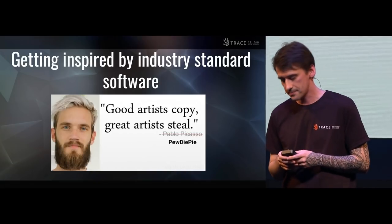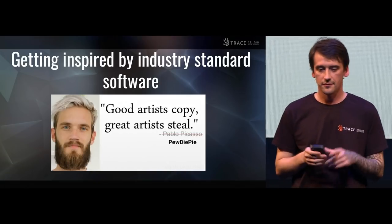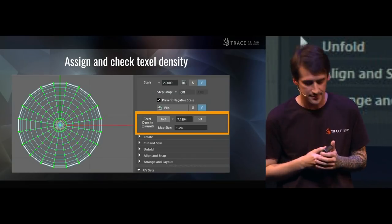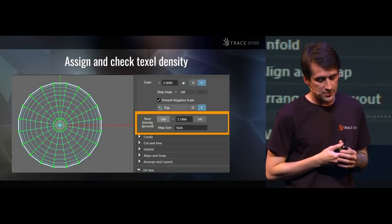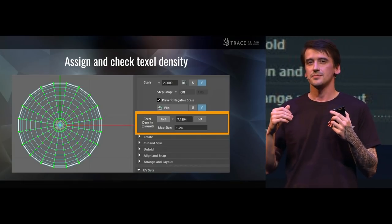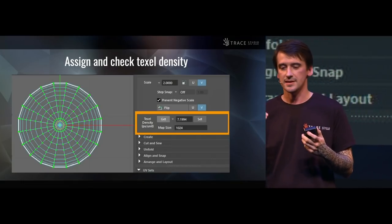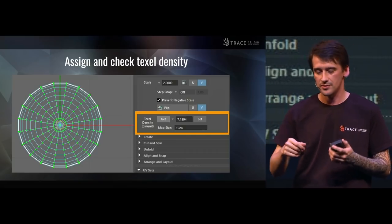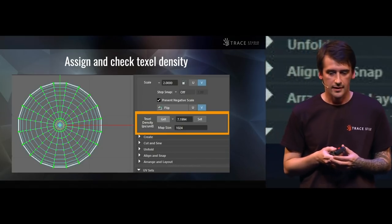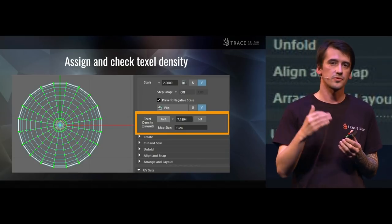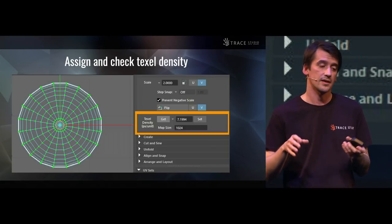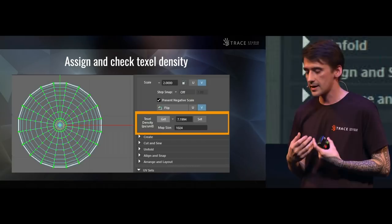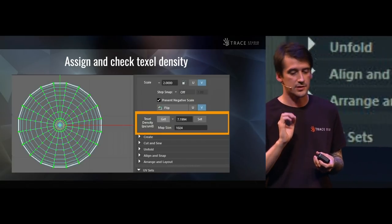I think the best way would be to get inspired by the example of other industry standard software, which has a lot of neat features. First of all, assigning and checking texel density by clicking a button. This one is really important because you do not want your texel density values across all of your assets to be random — you need to get them more or less uniform. This would lead to a smoother player experience; otherwise, some assets will look pixelated and blurry while others will look crisp and texture-rich.